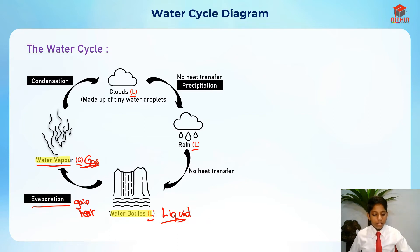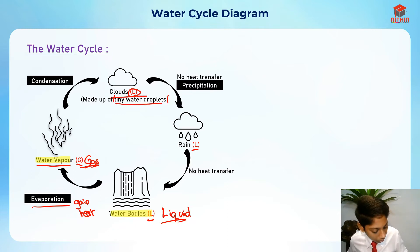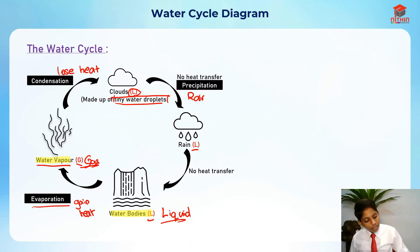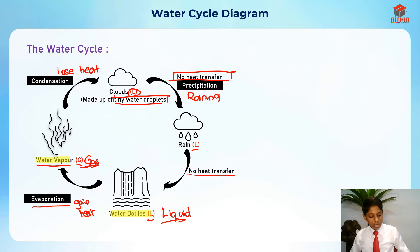After water vapor, it actually condenses to form clouds. Clouds are actually not gases — they are liquids. Most students think that clouds are gas, but actually they are made up of tiny water droplets. This is very important to take note of. During condensation, you actually lose heat. Then after the clouds, there's precipitation, which is basically raining, and there is no heat transfer there. The rain actually goes down into the water bodies, and that also has no heat transfer.